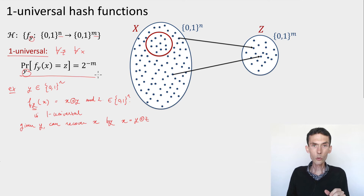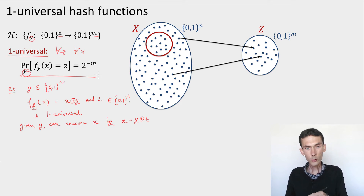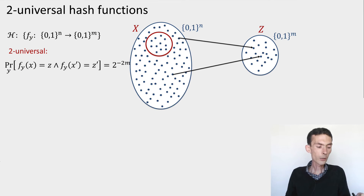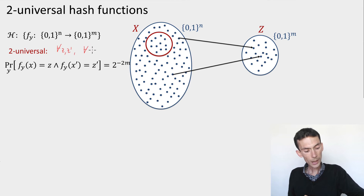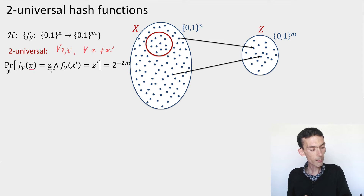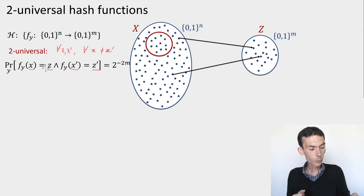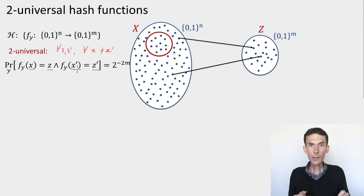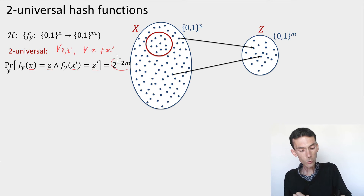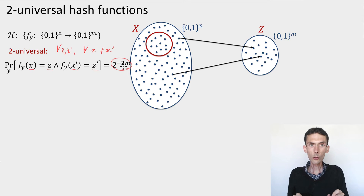What's a two-universal family of hash functions? It's a family satisfying the following condition: for every z and z prime, and for every x different from x prime, the probability that x is mapped to z and also x prime is mapped to z prime — simultaneously looking at the value of the function on two different points — should equal 2 to the minus 2m, the same as if we had chosen completely uniformly random strings z and z prime.